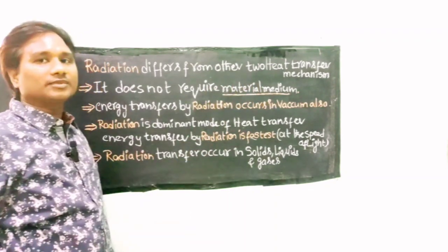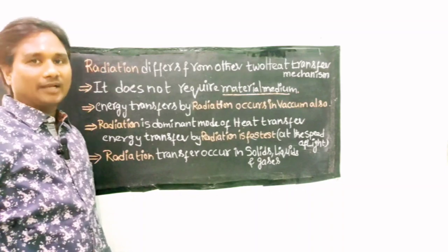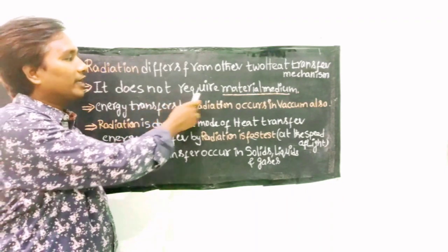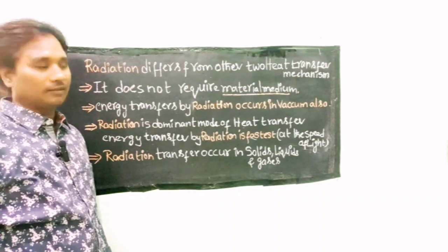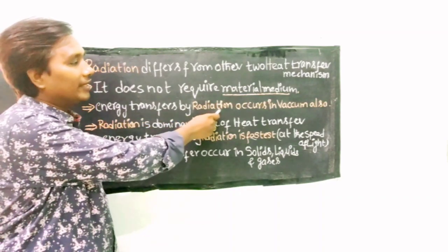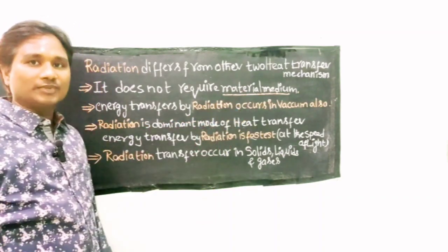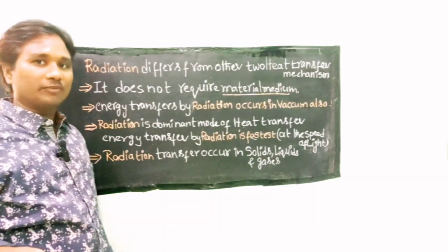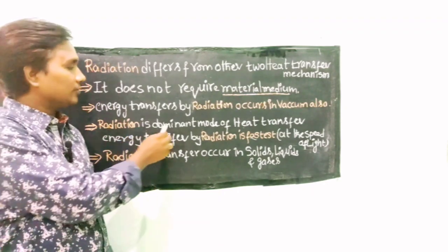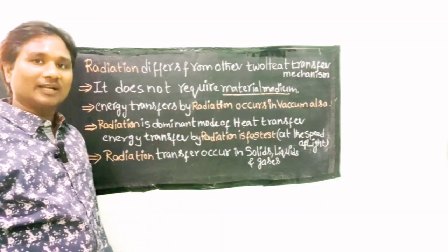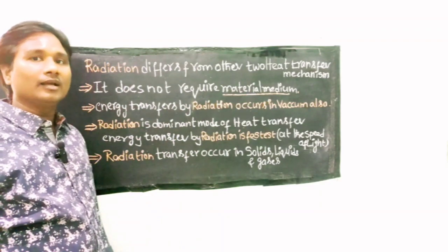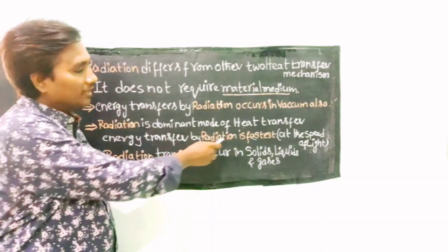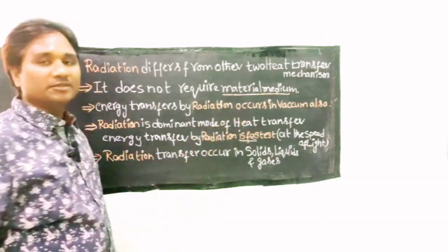Radiation is different from the other two heat transfer mechanisms — conduction and convection — in that it does not require any material medium to travel. Energy transfer by radiation occurs in vacuums as well as without vacuum. Radiation is a dominant mode of heat transfer compared to conduction and convection because energy transfer by radiation occurs at the speed of light.